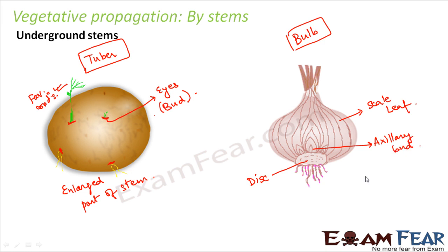The axillary buds give rise to new shoots, while roots emerge from the base of the bulb. The bulb is nothing but a modified stem used for food storage, found underground. At the base of the bulb, the modified stem forms the disc from which roots emerge. So in the case of onion also, what we actually eat is a modified part of the stem that can give rise to new roots and new shoots.